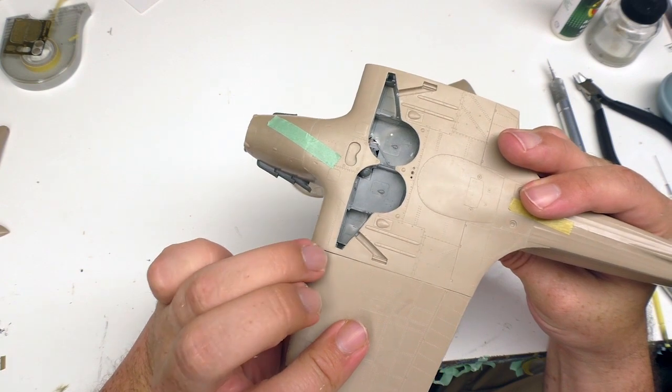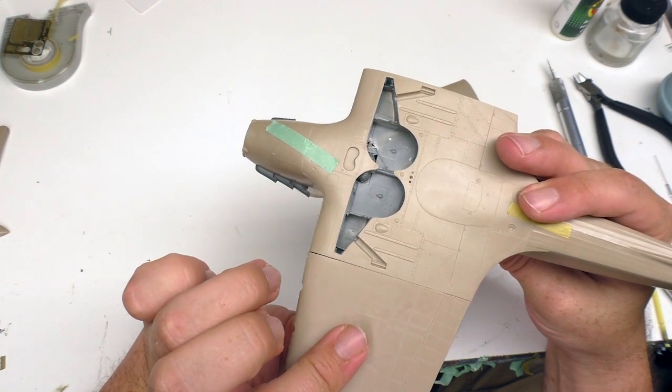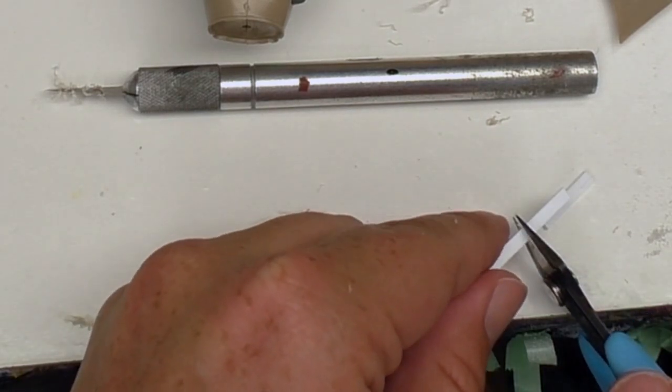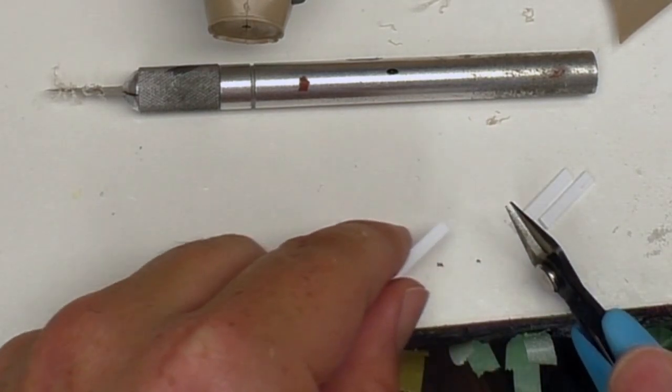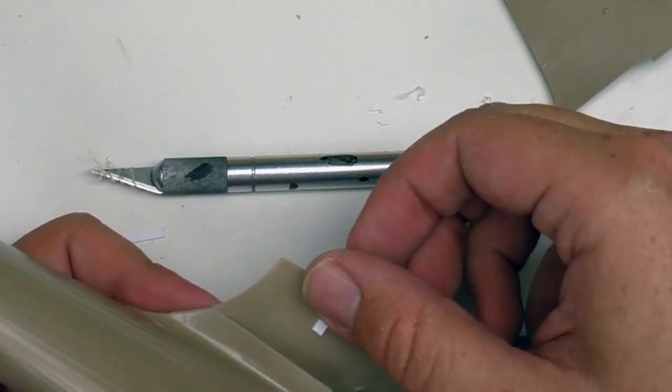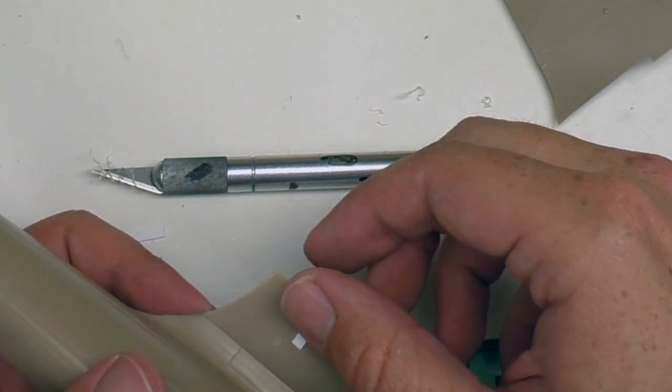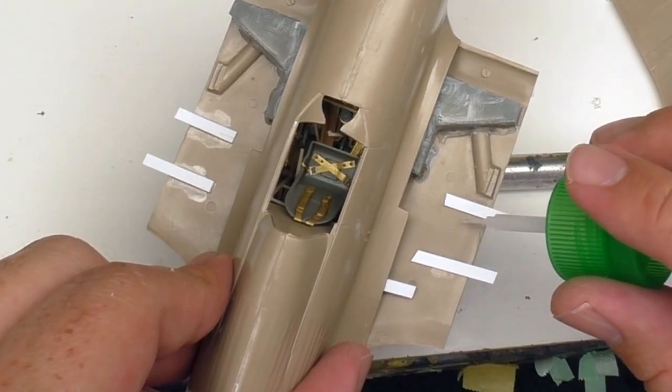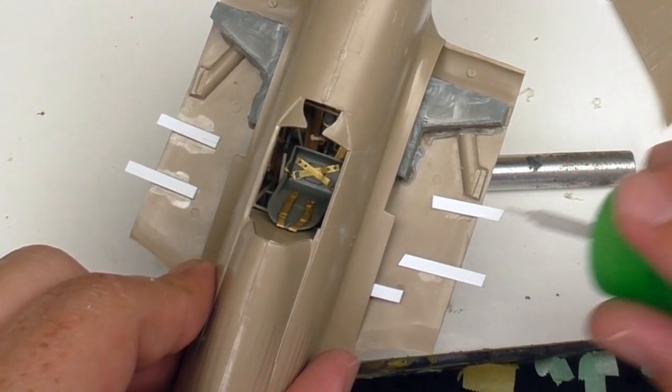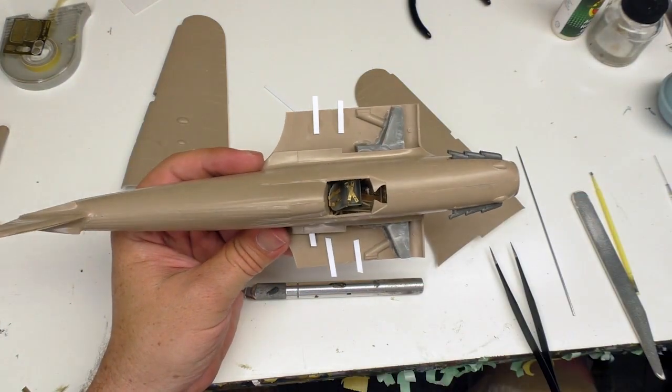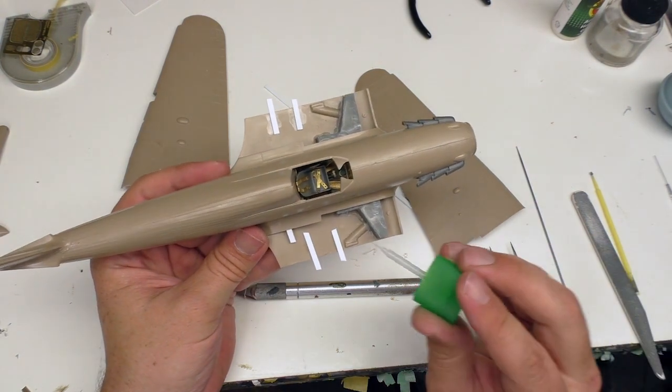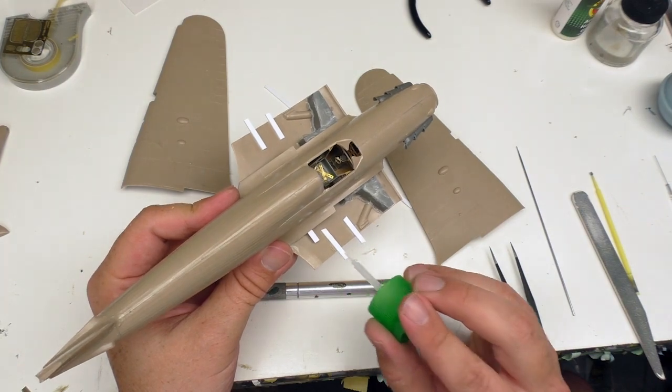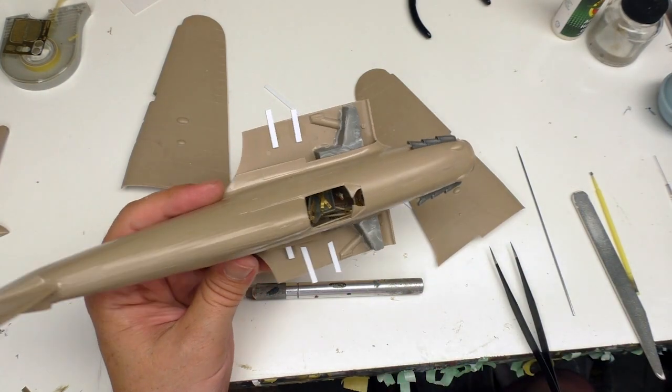And on the bottom side. Again, keeping in mind that there's going to be photo etch that goes here. Not too shabby. So, these pieces here should help with minor alignment just to keep the wings where they need to be. Give the glue something else to set to. All that good jazz.